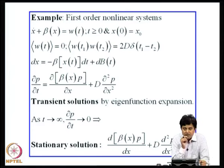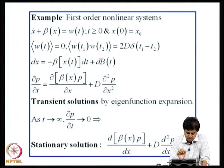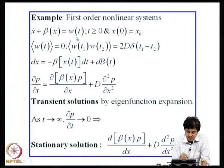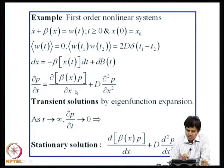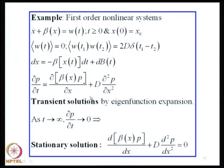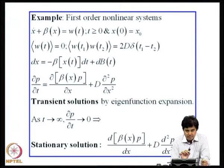Returning to the first-order nonlinear system ẋ + β(x) = W(t), the Fokker-Planck equation can be solved using variable separation and eigenfunction expansion for transient solutions. If we restrict to steady state, setting ∂p/∂t = 0 eliminates the time variable, leaving an ordinary differential equation. This reduction is valid provided the system admits a steady state, which depends on the nature of β(x).